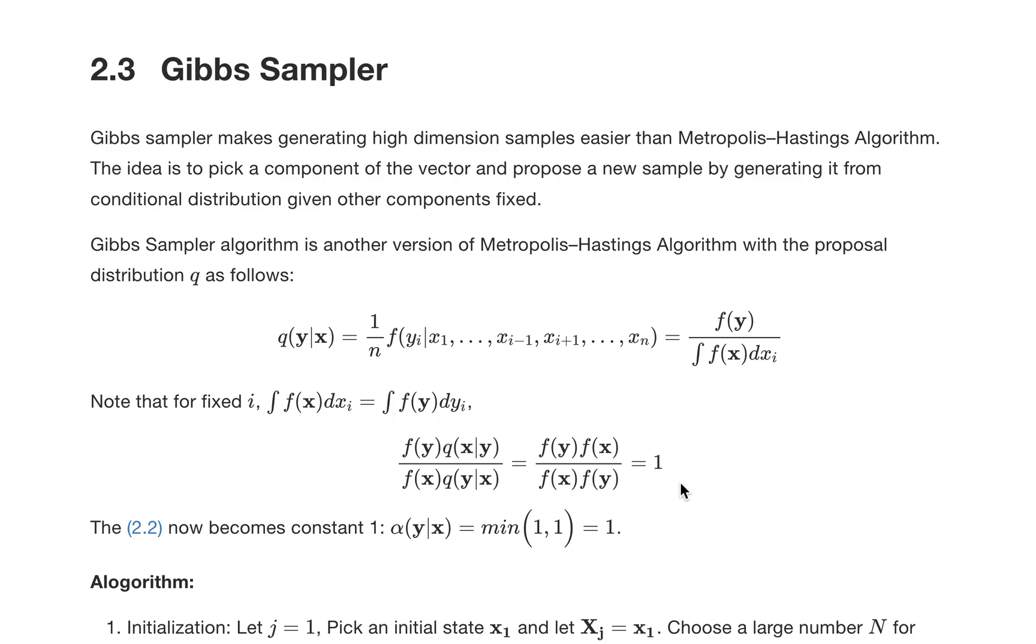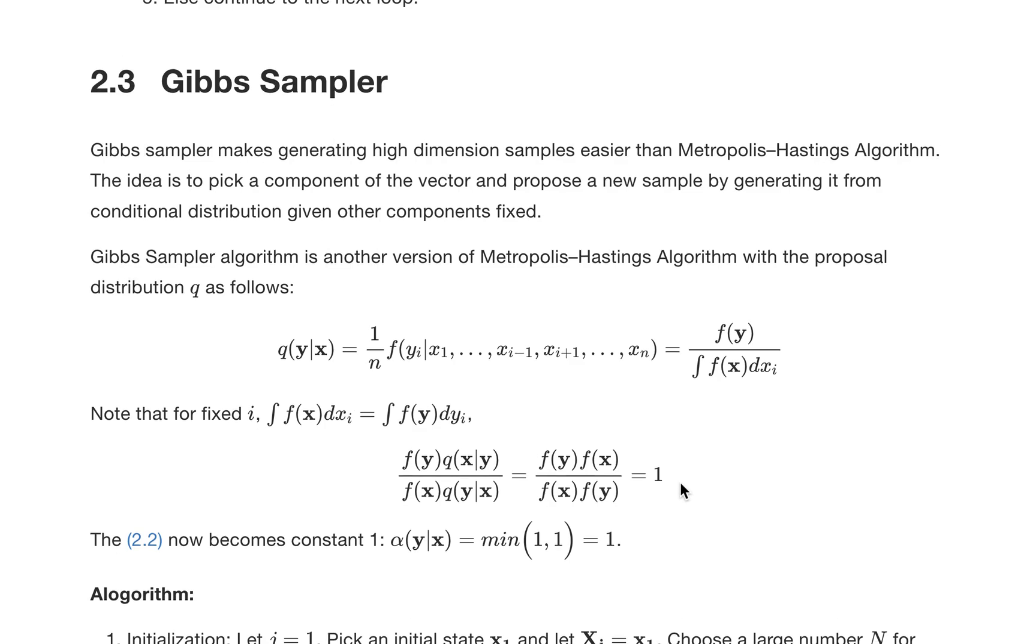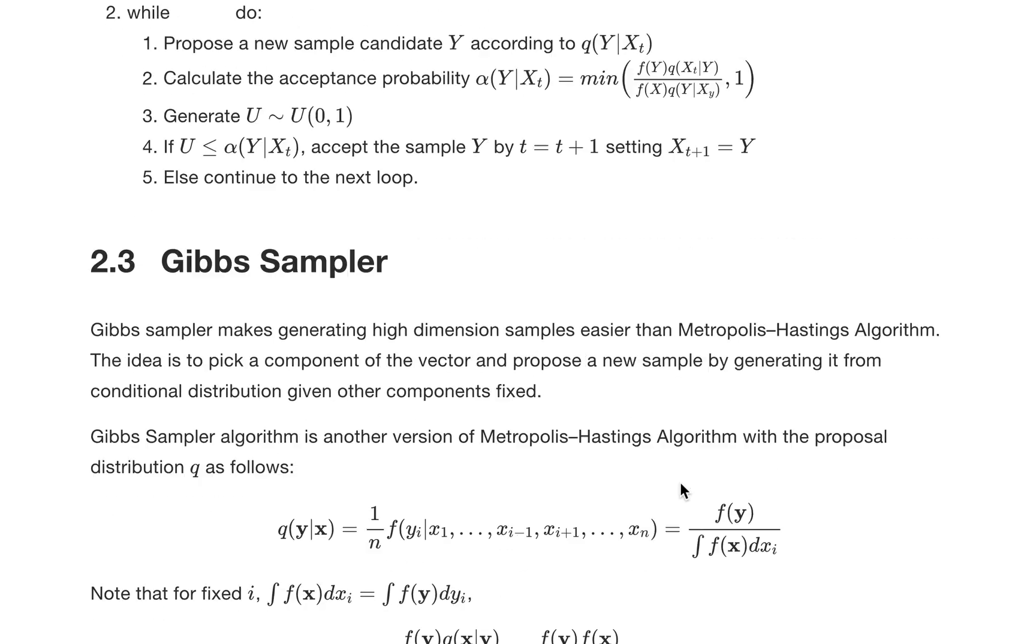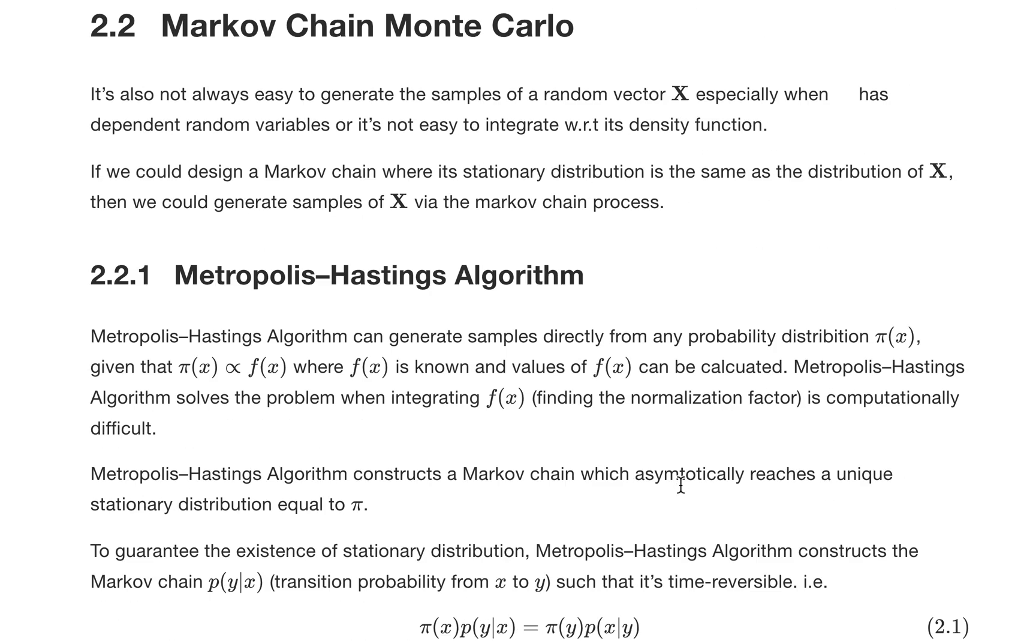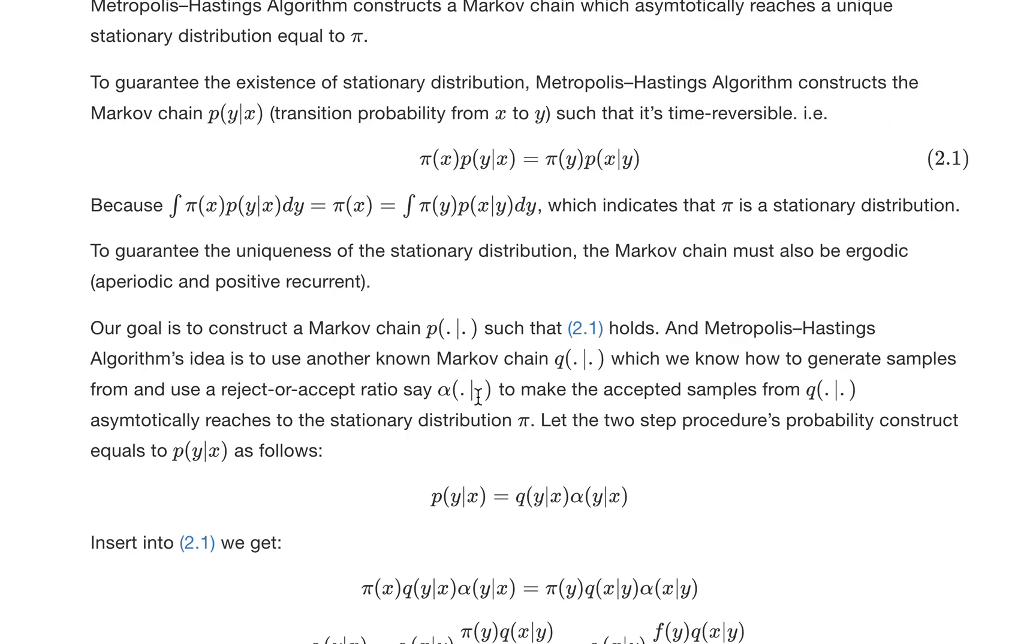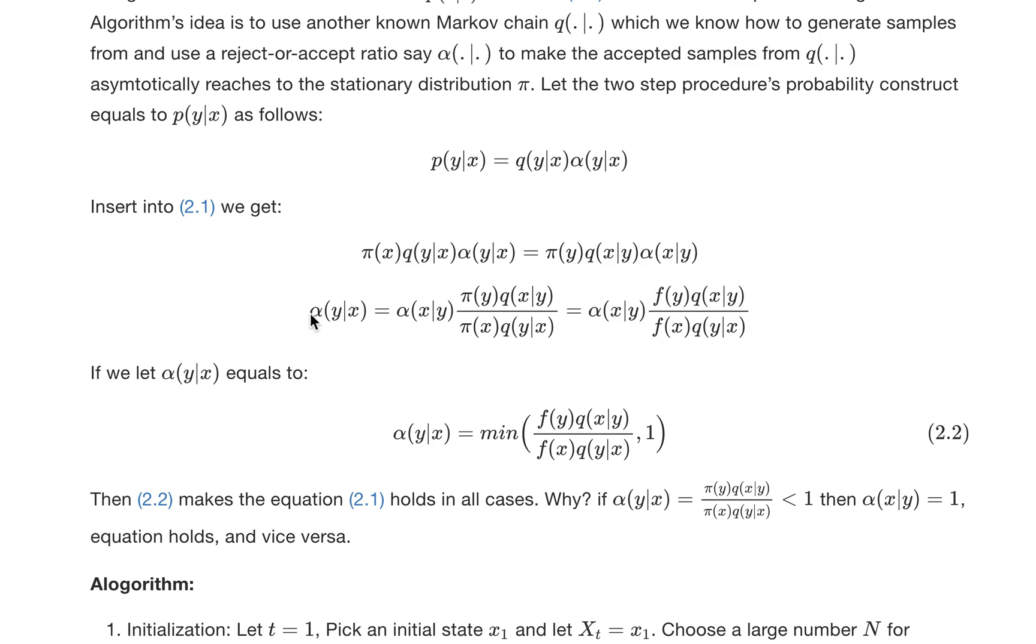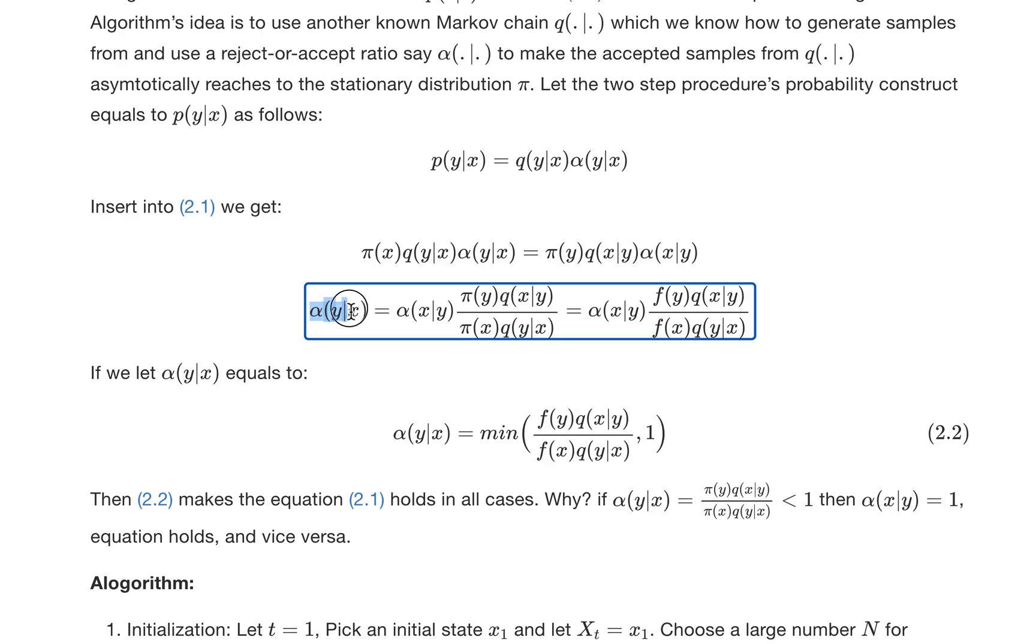For those who remember the proposal probability q we talked about in the last Metropolis-Hastings algorithm, we talked about the rejection-acceptance probability alpha.